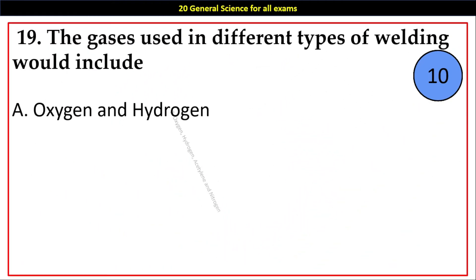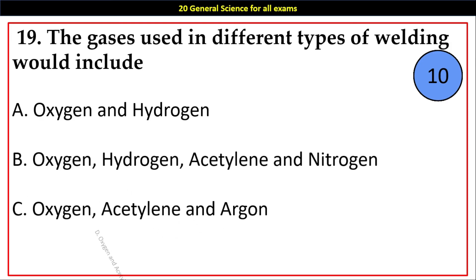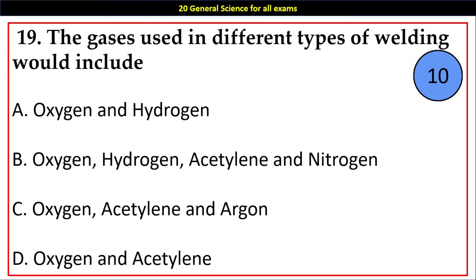Question number 19. The gases used in different types of welding would include: Options A. Oxygen and Hydrogen, B. Oxygen, Hydrogen, Acetylene and Nitrogen, C. Oxygen, Acetylene and Argon, D. Oxygen and Acetylene. Answer: D. Oxygen and Acetylene.